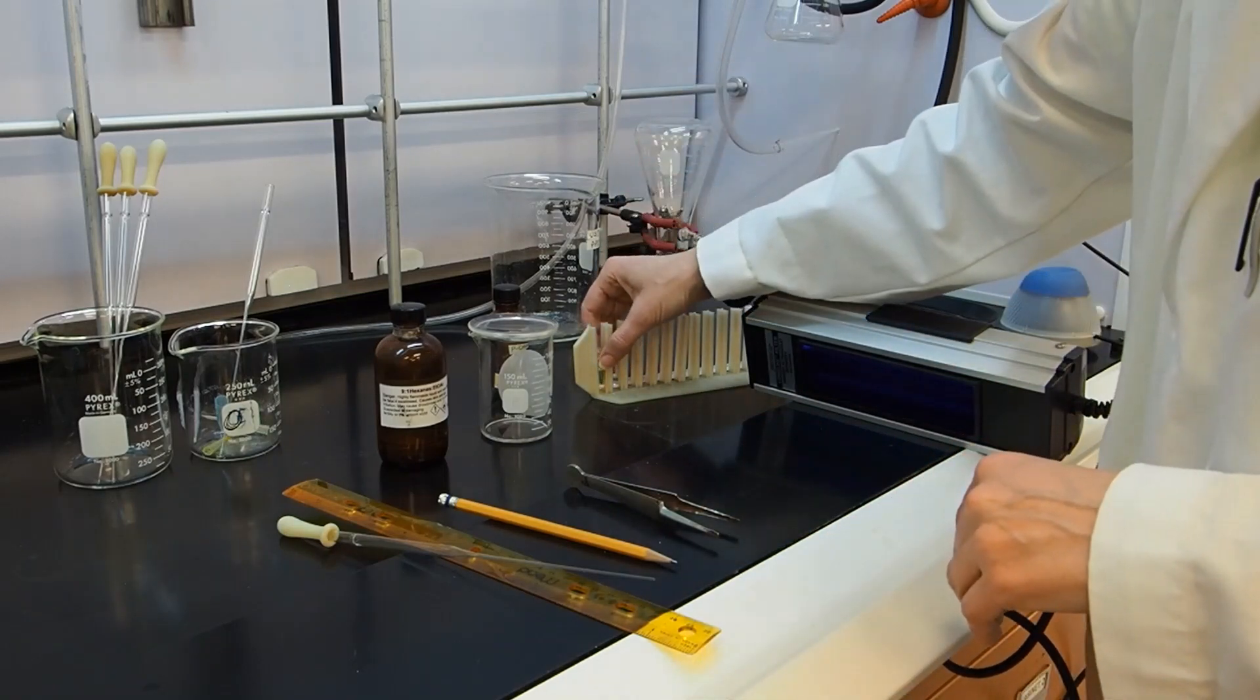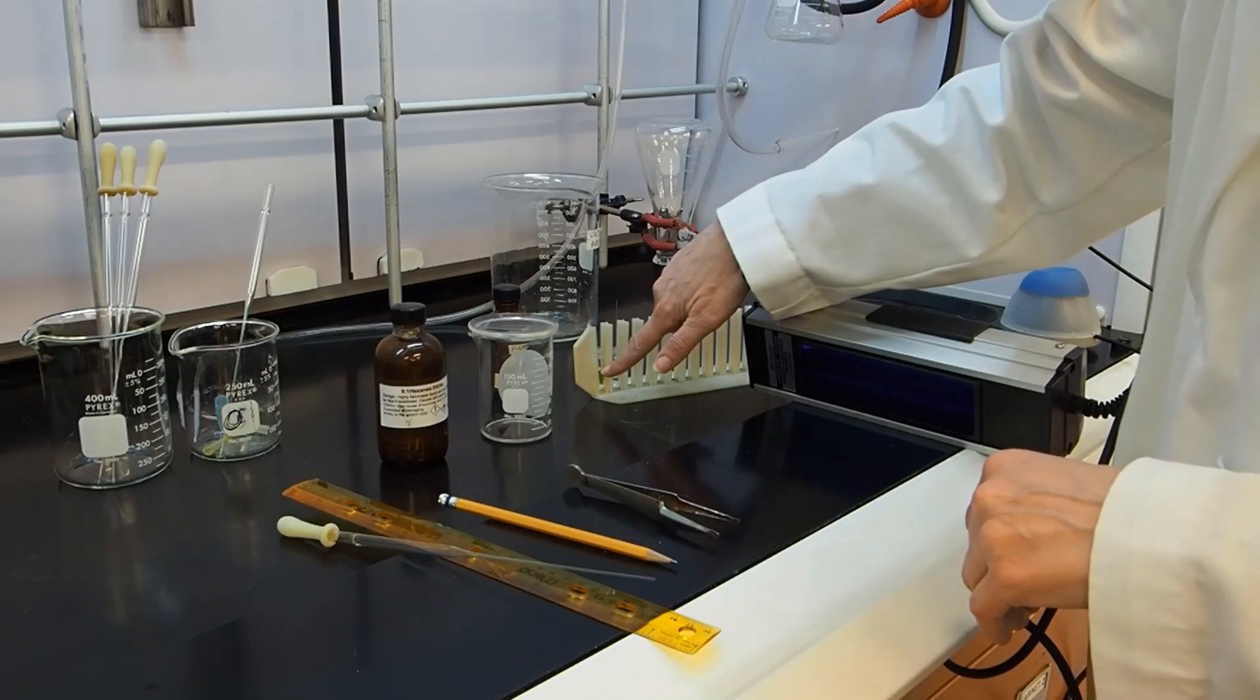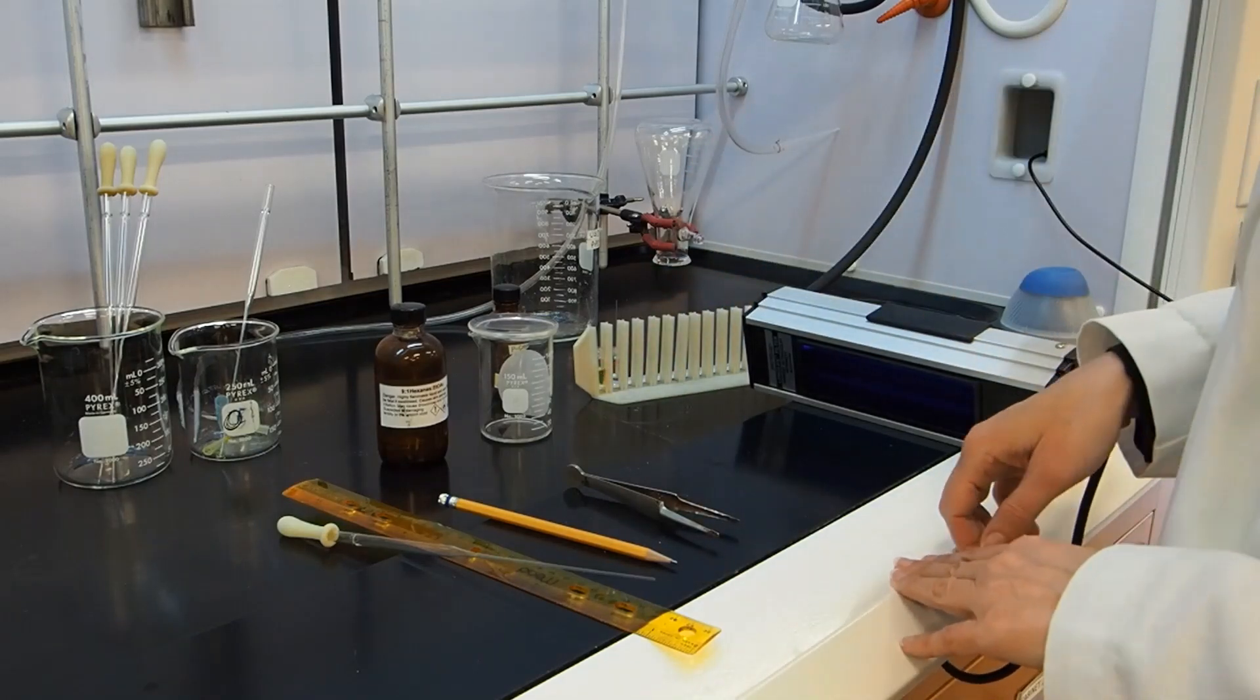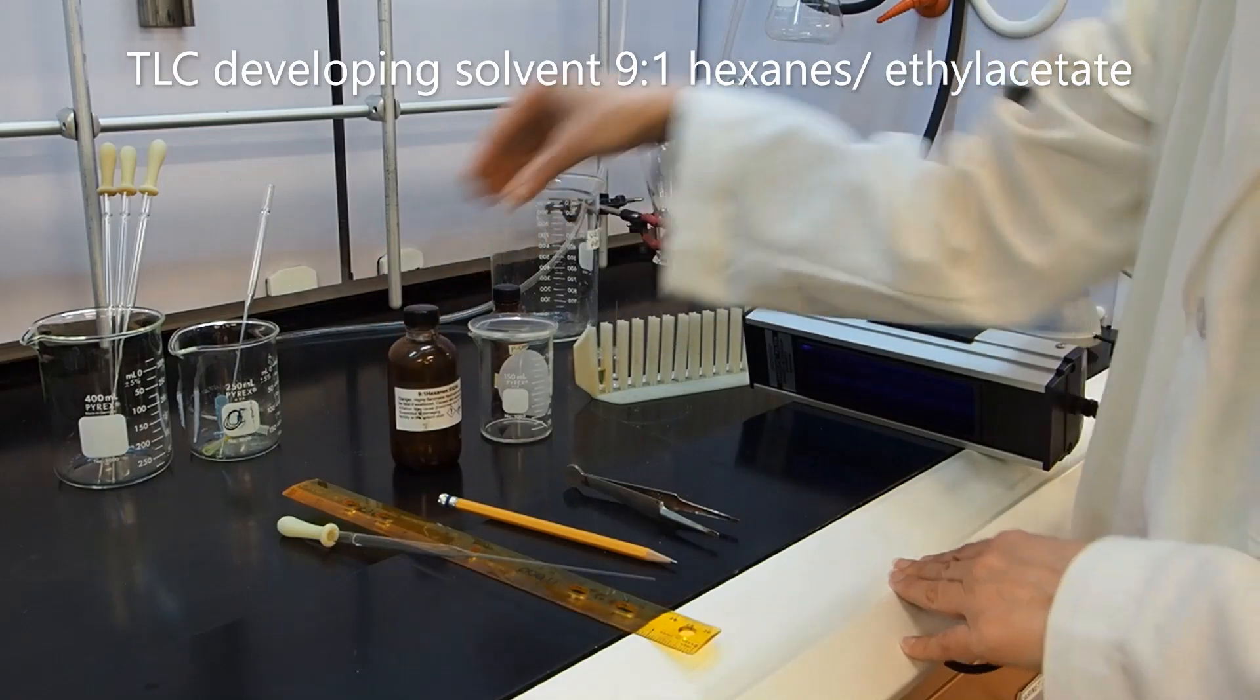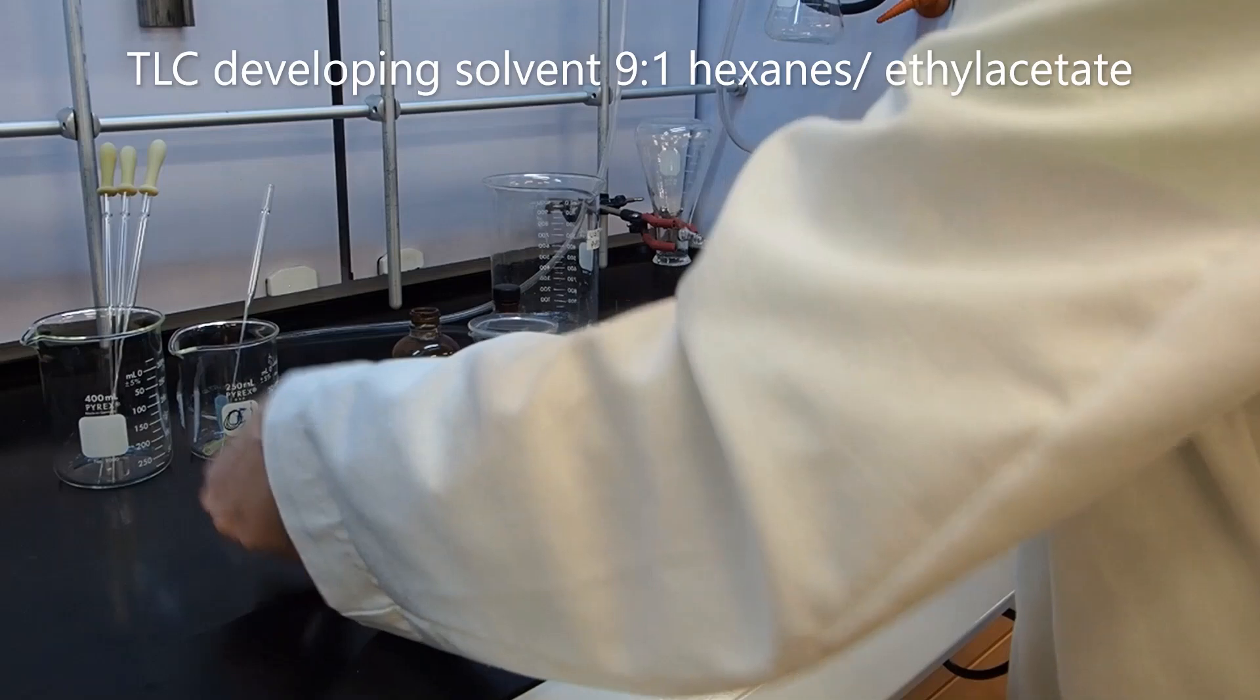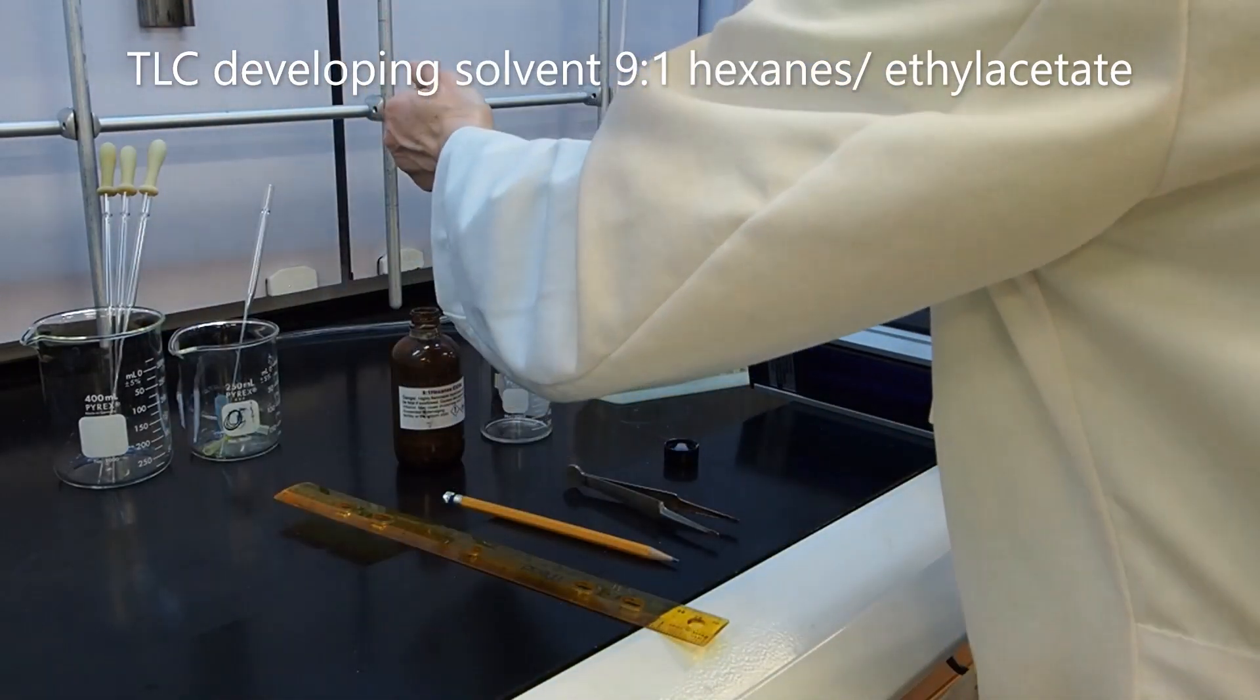I have another small vial with a drop of p-cresol. Both the p-cresol and the reaction mixture drop have been diluted in the TLC solvent, which is 9 to 1 hexane ethyl acetate. I'm going to add some of that to my TLC chamber, which is just a beaker with a watch glass on top of it.